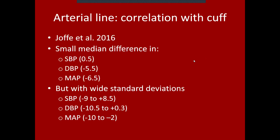Given that the arterial waveform has variable damping properties that change hour to hour and can change depending on where it's located in the body — is the arterial line really any better than a cuff blood pressure? The answer, from that same study by Jaffe et al., is that it still is the gold standard.